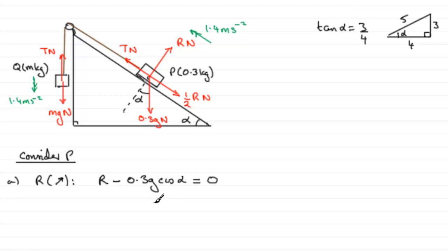We can get R now very easily, because all we've got to do is add 0.3 G cos alpha to both sides. So we've got 0.3 times G. G is 9.8. And the cosine of alpha, we can just take it from here, is adjacent over hypotenuse, 4 fifths.